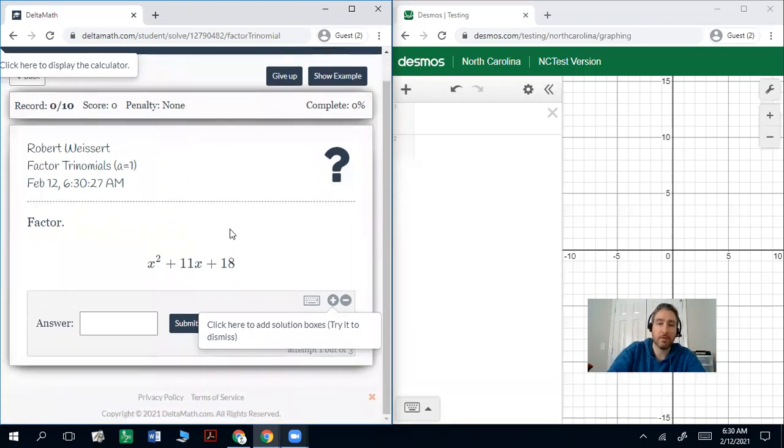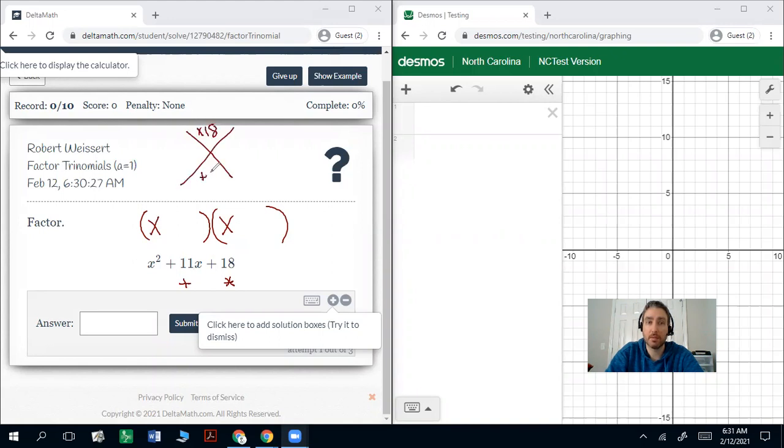So the goal for factoring is you want to be able to come up with the trinomials that don't have a number in front of x squared. Basically two groups that would multiply to that and they're going to start with an x. And you have to think of two numbers that multiply here to the last term, but also add to 11. So you can think about if you got to multiply to 18 and add to 11, what two numbers would work? And if you do some trial and error, you're going to get 9 and 2, right? Positive 9 and positive 2.